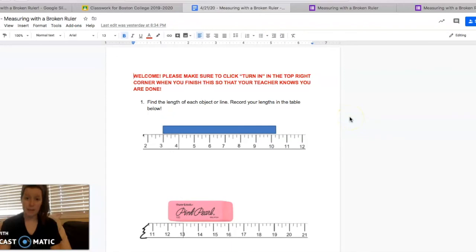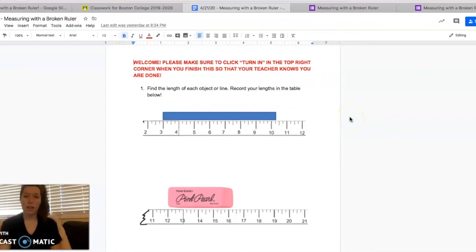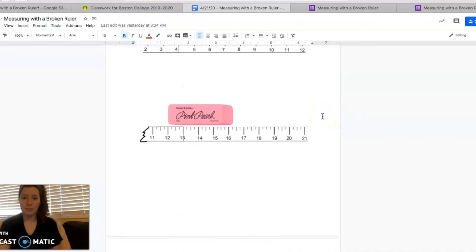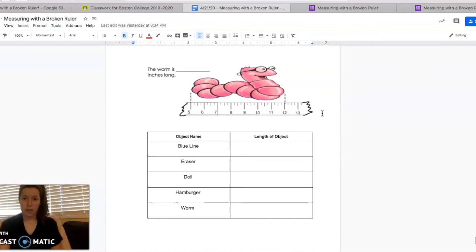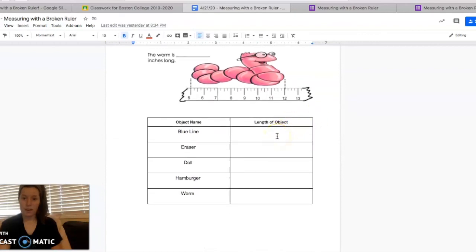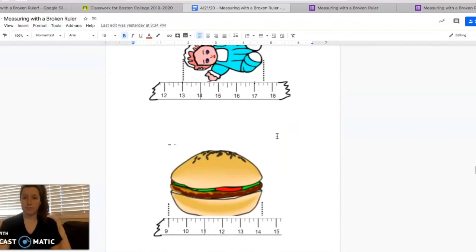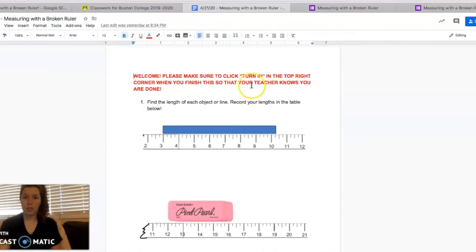And you'll see that the independent practice problems are on the Google Docs. So on today's assignment, there will be one that has the same icon, looks just like this. And when you click it, it should bring you to a page that looks like this. So this is your independent practice. You're going to find the length of each object or line. And then you'll record them down here in the table at the bottom. And when you're done, you'll click turn in. On mine, there's no turn in button because I'm the teacher. But there will be a turn in button up here in the right corner. You can click that and we will know that you are ready for us to check your work.